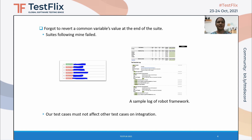The next mistake was that I forgot to revert a common variable's value at the end of the suite. After writing the test cases, I delivered them, and my suite was combined with those of other testers. There was a variable that was common to all the suites, and I had changed it according to my requirement but forgot to change the value back to its original value. Because of this, the suites that followed mine failed.